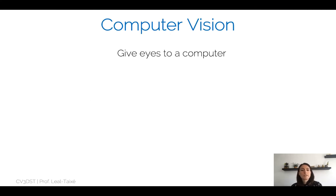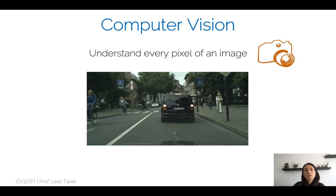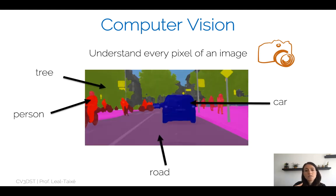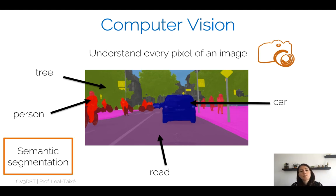In computer vision, we want to give eyes to a computer. We want to look at the world through a camera and try to understand every pixel that is provided by that camera. This matrix of numbers — this image — is the only thing we have to interpret the world around us. We want to interpret this world in a semantic way: know where the car is depicted in the image, which pixels belong to a car, a tree, a person, or the road. This is the task we call semantic segmentation.